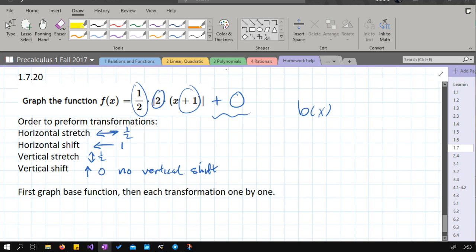All right, so our base function is absolute value x and we graph this. We get the vertex at zero, zero, you can make a table of values too. This goes up to the left, up to the right.